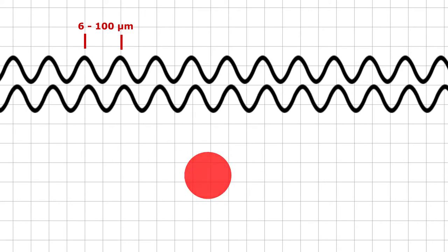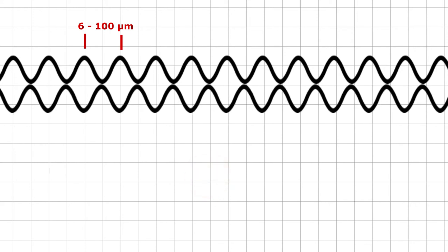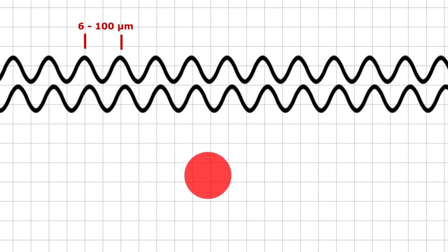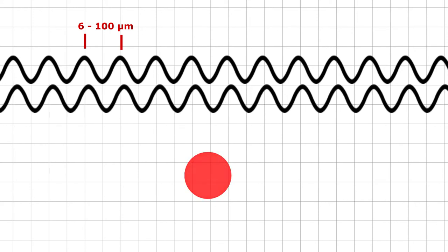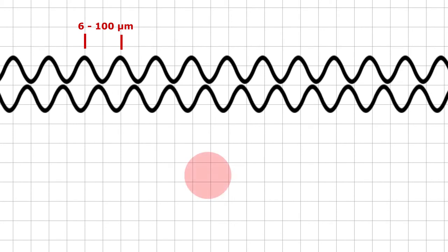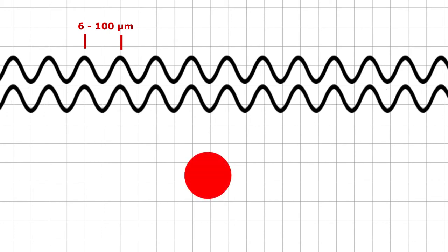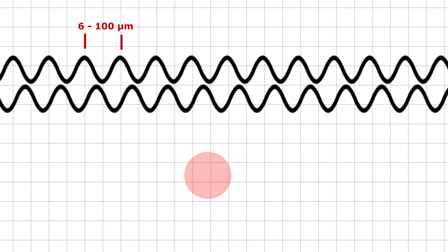And this is the amazing part: because the infrared wavelength we're dealing with is only about six to 100 micrometers, we can detect change in distance to the mirror by half that amount. And that's a distance of only three micrometers.